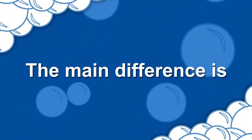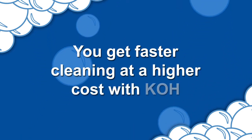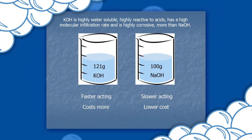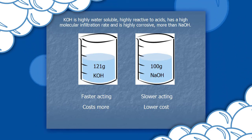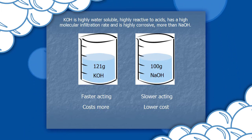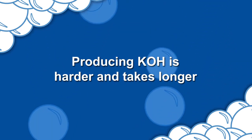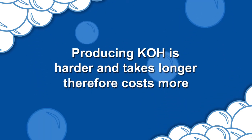The main difference is that you get faster cleaning at a higher cost with KOH. Potassium hydroxide is highly water soluble, highly reactive to acids, has a higher molecular infiltration rate, and is highly corrosive — more than sodium hydroxide, NaOH. But producing KOH is harder and takes longer, therefore costs more.